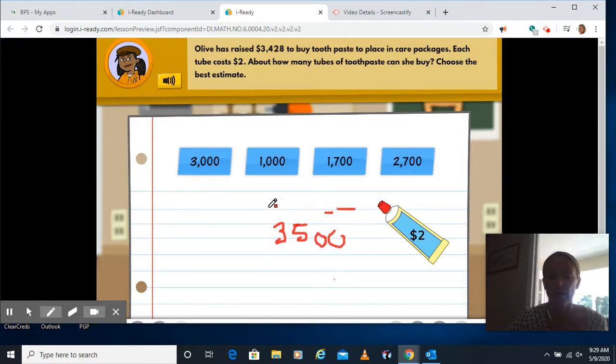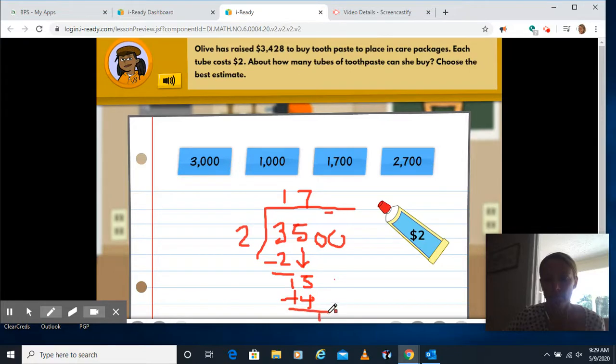If I divide that by two, two goes into three once. Two here, one, bring down the five. Two goes into 15 seven times because that gets us to 14. Two goes into 10 five times. Kind of running out of room here. I'd add a zero here and then I'd have another zero. So for me, that's closest to 1,700.